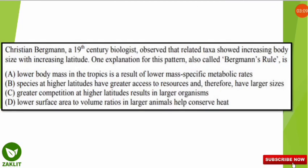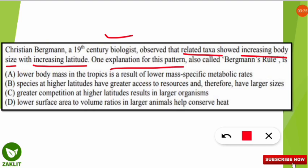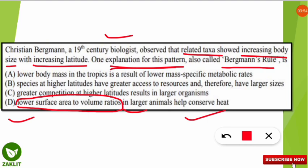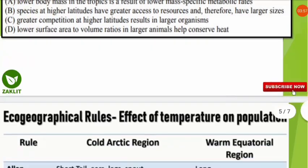The next question refers to Christian Bergmann, a 19th-century biologist who observed that related taxa showed increasing body size with increasing latitude. This pattern is called Bergmann's Rule. The correct option is D: animals at greater latitudes have lower surface area to volume ratios, which helps them conserve heat. To understand this properly, we should also know the five important eco-geographical rules.